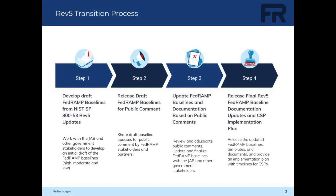Hi, I'm Andrew Lins, and I'll walk us through the high-level steps for the transition plan. We are currently in Step 1, where we are reviewing NIST SP 800-53 Rev.5 and draft updates to the FedRAMP baselines — high, moderate, and low.